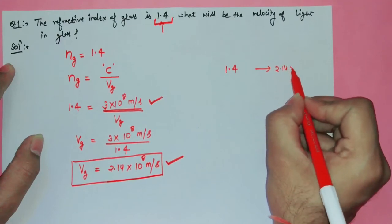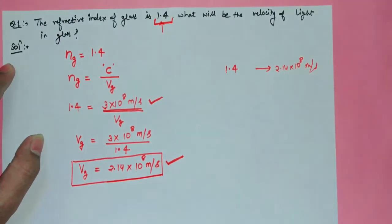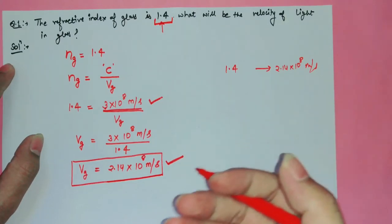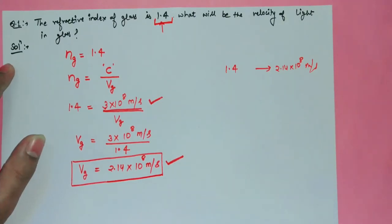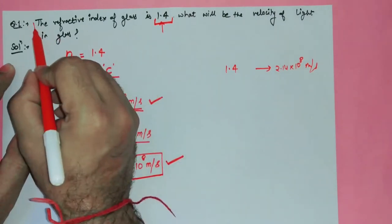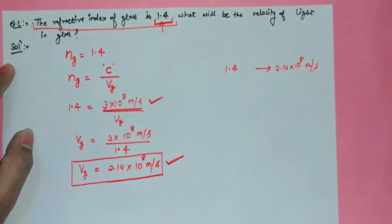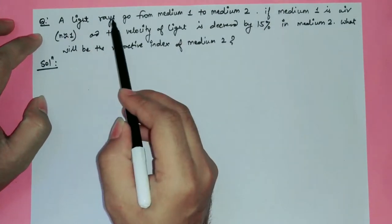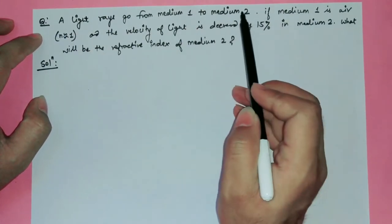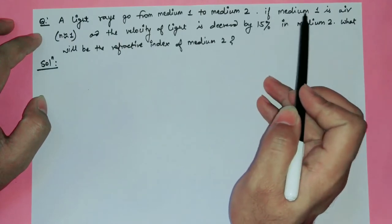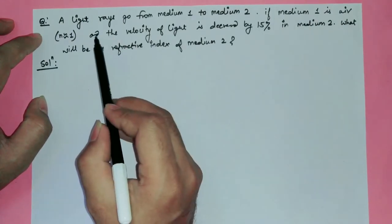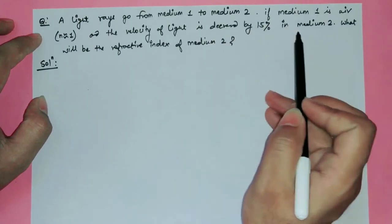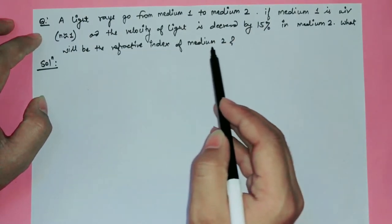For any medium whose refractive index is given, we can calculate the speed of light in that medium. Now there is another question: light rays go from medium 1 to medium 2. If medium 1 is air and the velocity of light is decreased by 15% in medium 2, what will be the refractive index of medium 2?